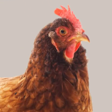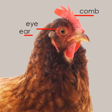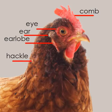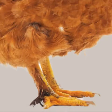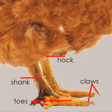Now let's look at the head and legs in more detail. On the head you have the comb, which comes in a variety of styles depending on the breed. This chicken has a single comb. Then there's the eye, the ear, the earlobe, the hackle which are the feathers on the back of the neck, the wattle and the beak. On the legs there's the hock, shank, toes and claws.